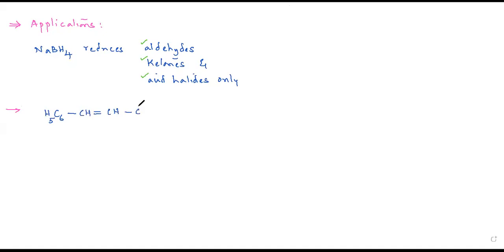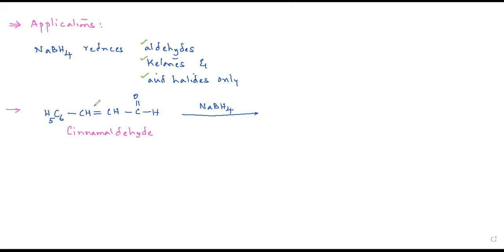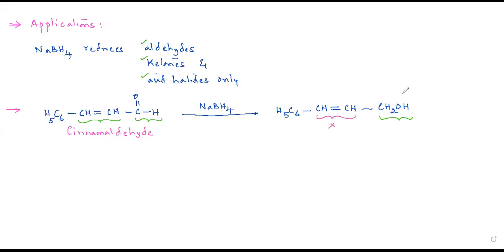The cinnamyl system. This is cinnamic acid. With sodium borohydride, let us take cinnamaldehyde, because the acid group of cinnamic acid cannot be reduced by sodium borohydride. So let me take cinnamaldehyde — what we have actually taken with lithium aluminum hydride also. Now check out the two things. The product will be this — only the aldehyde group is reduced, whereas the other group, the C=C double bond, is left as such.